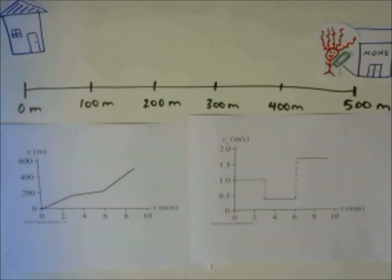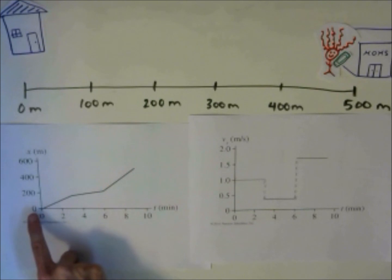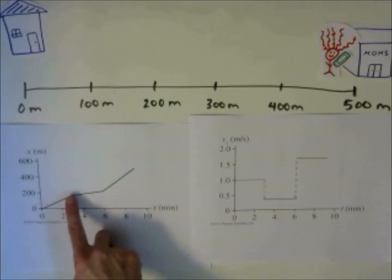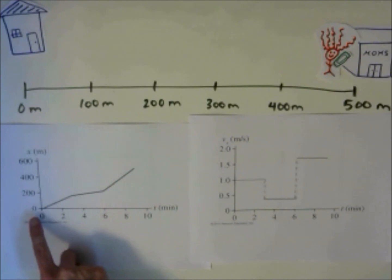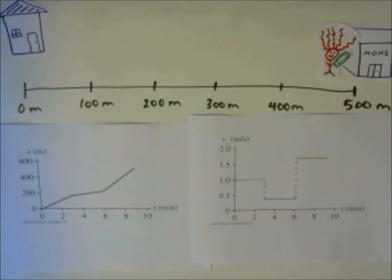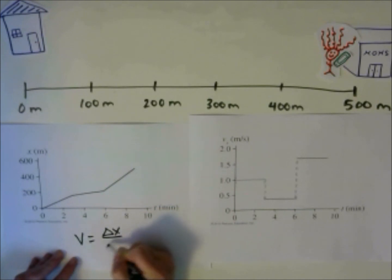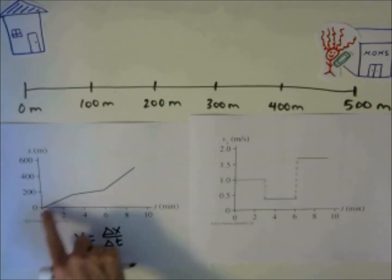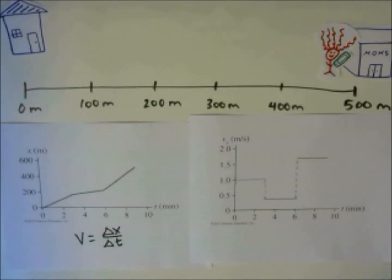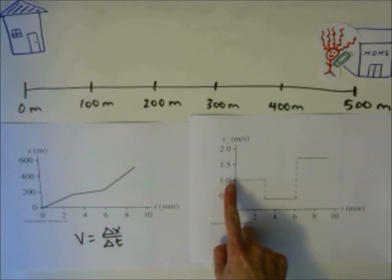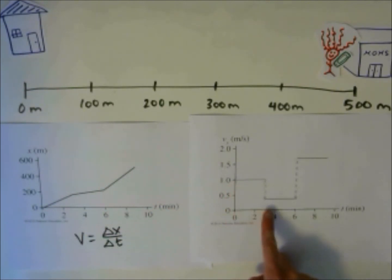This is the velocity-time graph that matches the position-time graph. How can we get from one to the other? If you look at the first section from 0 to about 3 minutes, you can see that her velocity is constant. If you find the slope using velocity equals delta x over delta t, you get a value of 1 meter per second. You can graph that on the velocity-time graph — for the first 3 minutes, her velocity was a constant 1 meter per second.